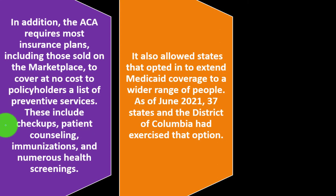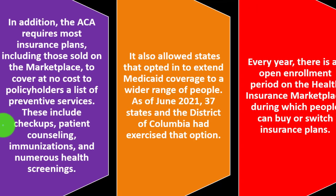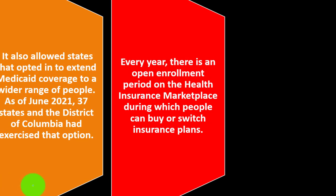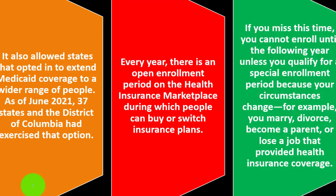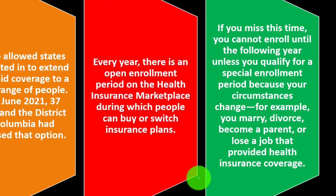States that opted in can extend Medicaid coverage to a wider range of people — as of June 2021, 37 states and the District of Columbia exercised that option. Every year, there is an open enrollment period on the health insurance marketplace during which people can buy or switch insurance plans. If you miss this period, you cannot enroll until the following year unless you qualify for a special enrollment period because your circumstances changed — for example, you marry, divorce, become a parent, or lose a job that provided health insurance coverage.